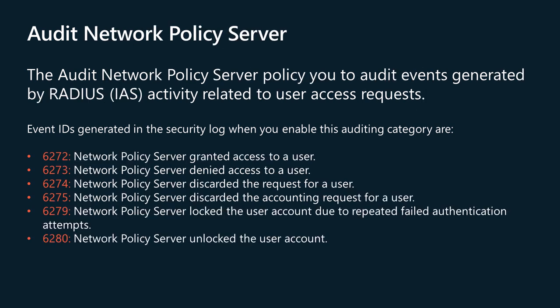The Audit Network Policy Server policy allows you to audit events generated by RADIUS, IAS (Internet Authentication Server — not the web server; that's just my Australian accent for those that are confused), and activity related to user access requests. These requests can be grant, deny, discard, quarantine, lock, and unlock. If you configure this subcategory, an audit event is generated for each IAS and NAP user access request. Network Access Protection hasn't been included in Windows Server since it was deprecated a decade ago. WINS survived though — WINS is the COBOL of Windows Server roles and features. This subcategory generates events only if the NAS or IIS role is installed on the server.